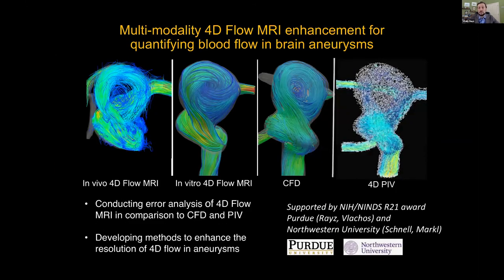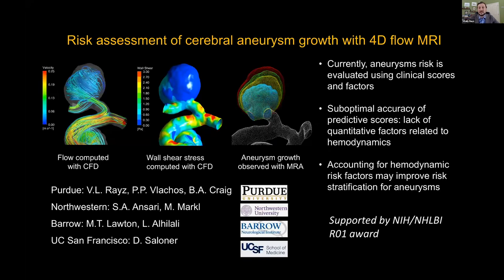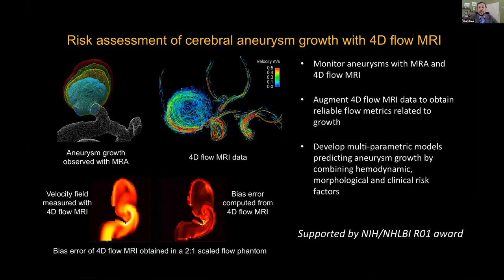This work is supported by an NIH R21 exploratory grant between Purdue and Northwestern. We are developing methods to enhance MRI resolution so we can better obtain relevant flow descriptors. Ultimately, our goal is to identify aneurysms at risk of growth and rupture by combining clinical risk factors currently used in practice with engineering analysis of blood flow risk factors. For developing predictive models we need a lot of patient data, and my connections to clinicians at several centers helped put together a team from Purdue, Northwestern, Barrow Neurological Institute, and UC San Francisco, recently funded by an NIH Heart, Lungs, and Blood Institute R01 grant to use enhanced 4D flow MRI measurements in patients to predict aneurysm risk.